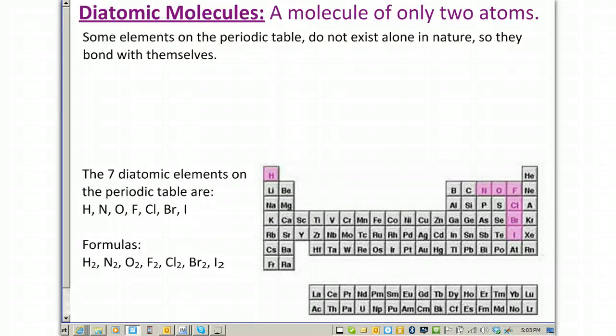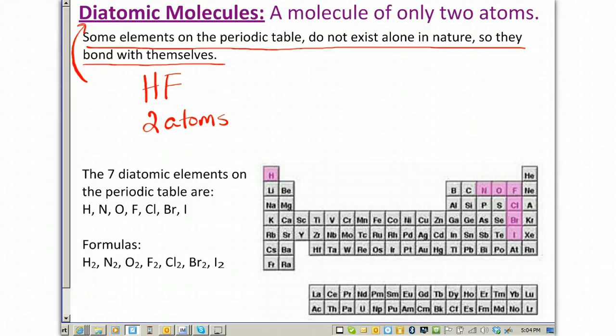Diatomic molecules is a molecule of only two atoms. So, some elements on the periodic table do not exist alone in nature, so they bond within themselves and become diatomic. Now, for the record, any molecule made up of two elements, for example hydrofluoric acid, is considered diatomic because it's made up of two different atoms. It could be two of the same atoms, and that would also be considered diatomic. So, for example, O2, which is oxygen, because it's made up of just two oxygen atoms, is considered diatomic as well. So, there are seven elements on the periodic table that only exist diatomically, meaning they don't exist alone in nature.